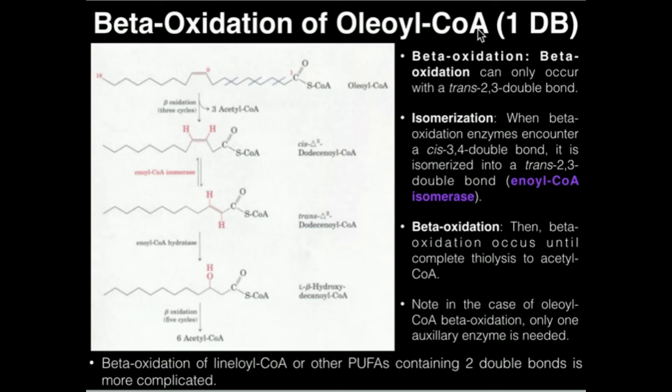In its conjugated form, it is called palmitoleoyl-CoA, and it is not shown here. That is because, in general, for oleoyl-CoA, the beta-oxidation of that works the same way.